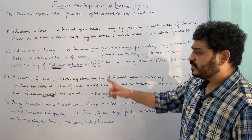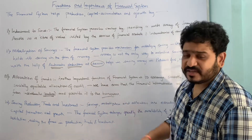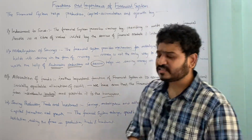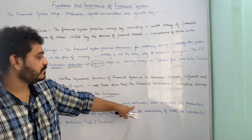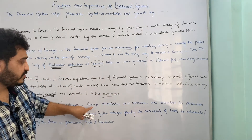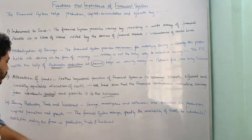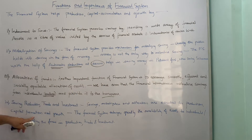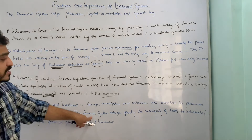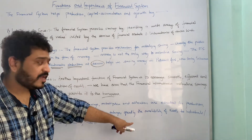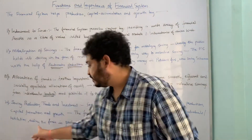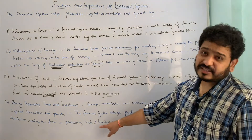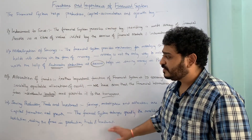Let us now move to the fourth function: serving production, trade, and investment. We have seen that the financial system helps in saving, mobilization, and allocation. These functions are essentially for production, capital formation, and growth. The financial system further aids by greatly enlarging the availability of assets to individuals as well as firms, supporting their production, trade, and investment decisions.